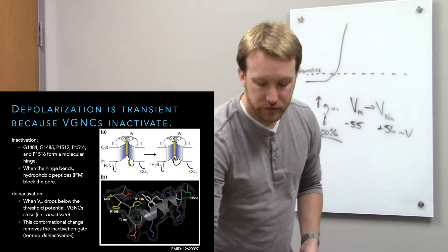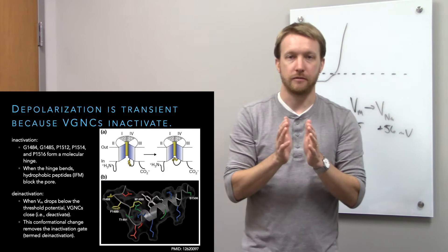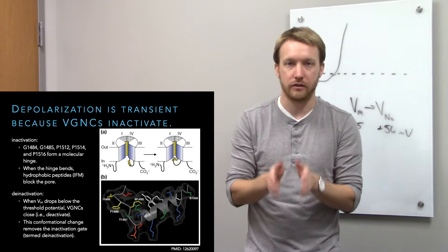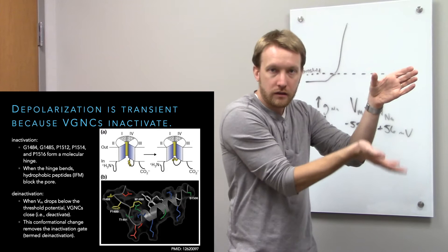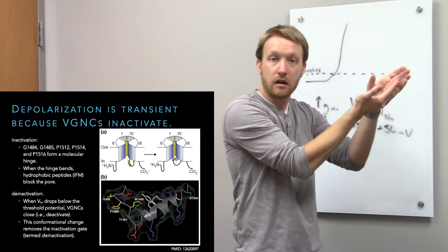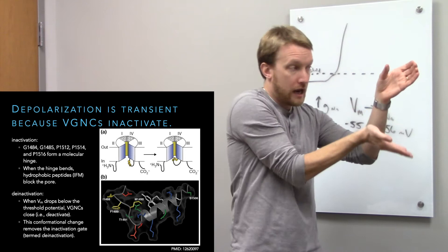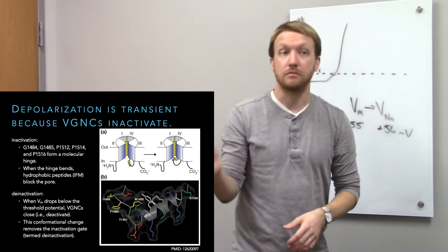That's where the third intracellular loop comes in — the inactivation gate. It flops around, but a series of amino acids acts as a hinge, restricting where it can move. After the channel opens, the inactivation gate has a chance to flap and land in the ion pore, where it sticks due to hydrophobic interactions — the IFM sequence. This prevents ions from moving through the channel. That's inactivation, which is different from deactivation.